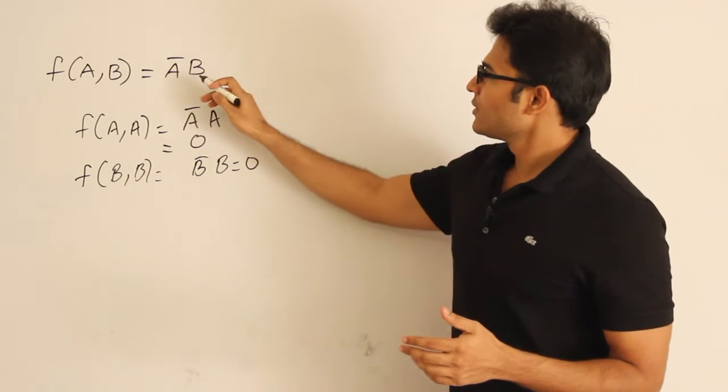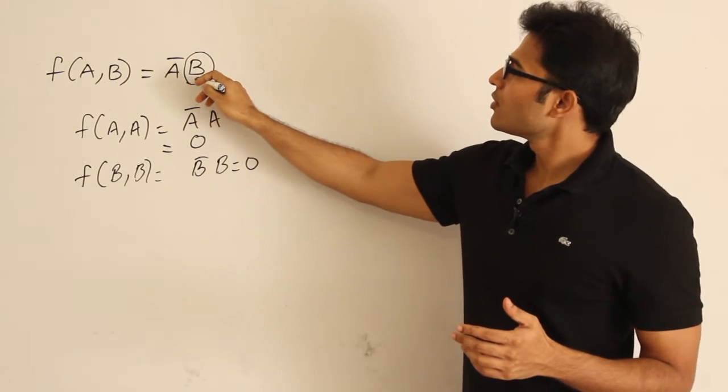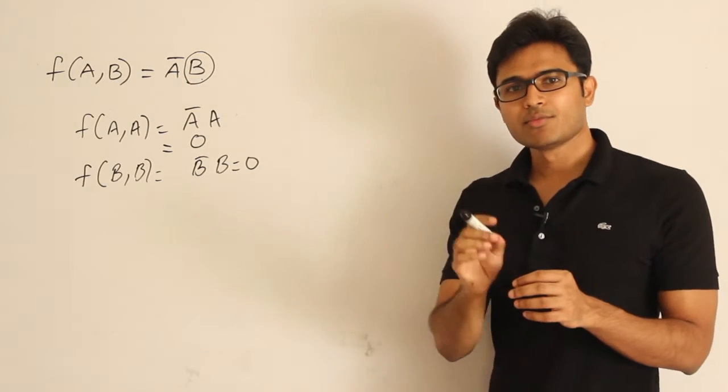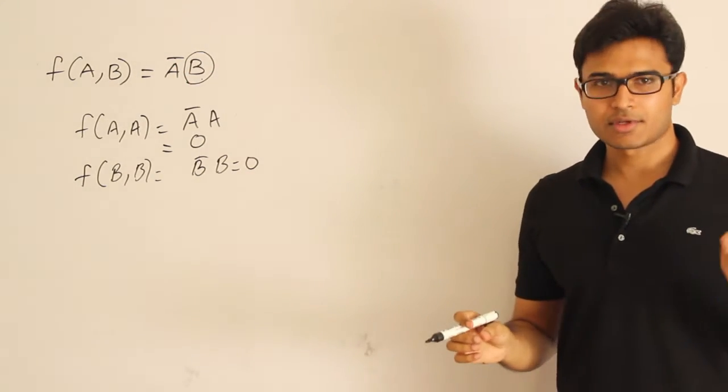But if you observe it, in this case if I put b equal to 0, since negation is already present in the expression, maybe I will try to remove everything and make it up somehow.